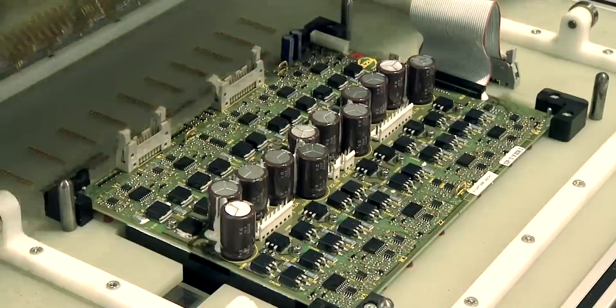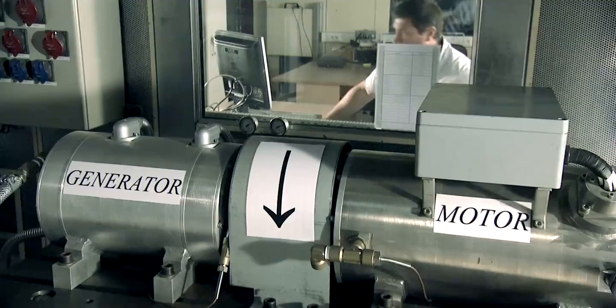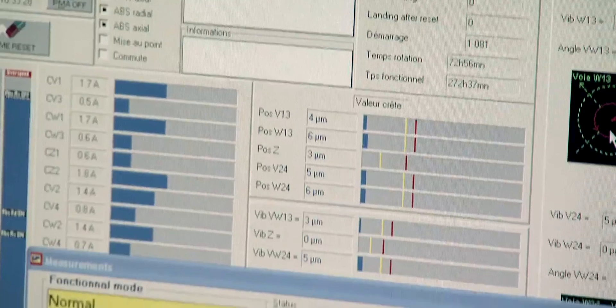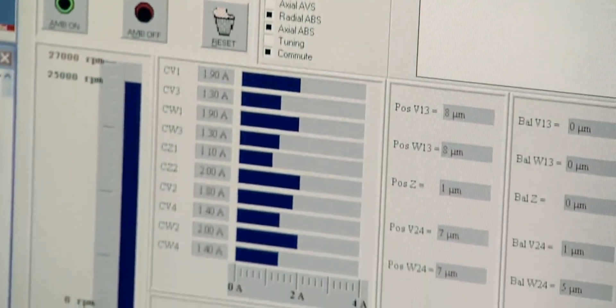SKF Magnetic Mechatronics' roots in aeronautical and space research are still felt. Research efforts in our 1,200-square-meter dedicated R&D facility continue to push the limits of engineering to create solutions that deal with extreme operating conditions.